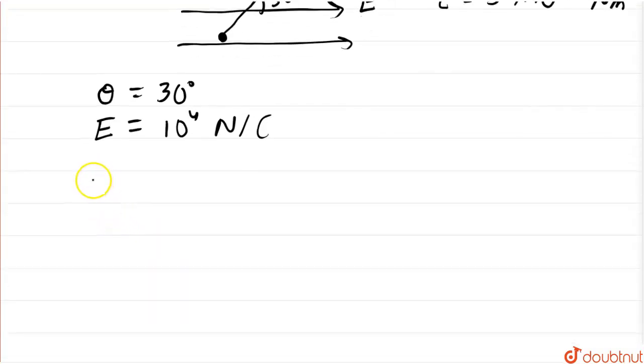Now, the formula for the torque experienced by a dipole when it is placed in an electric field is tau equals pE sin theta.